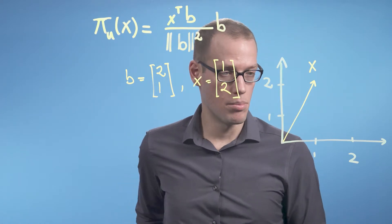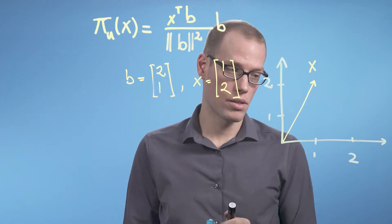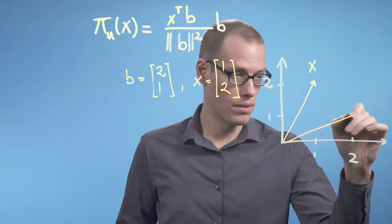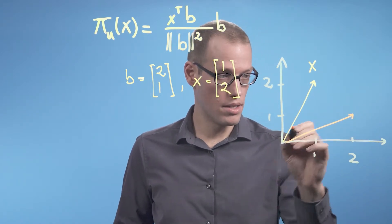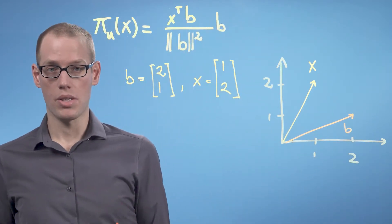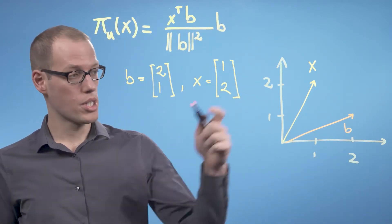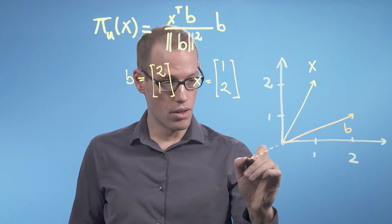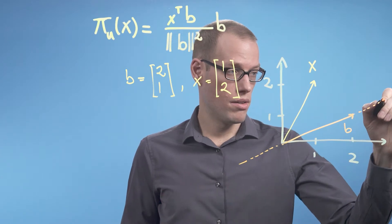And the vector b is going to be the vector [2,1]. So, this is b, and b spanning our subspace means that our subspace u is going to extend along this line.